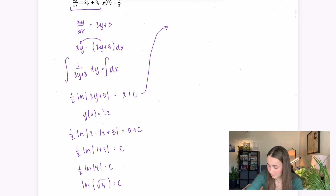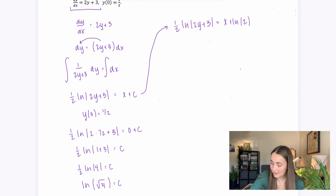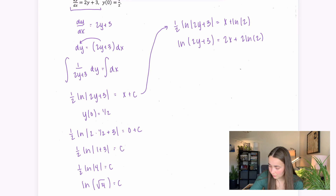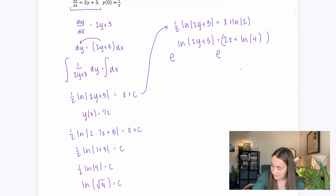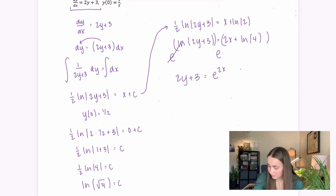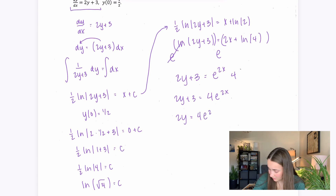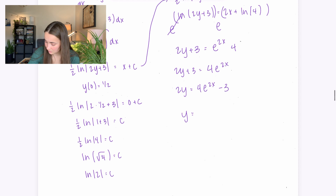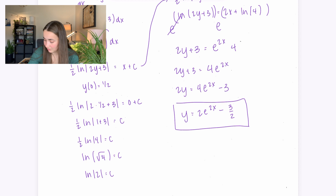Substituting c back: ½ ln|2y+3| = x + ln(2). Multiply by 2: ln|2y+3| = 2x + 2ln(2) = 2x + ln(4). Raise both sides as exponents of e: 2y+3 = e^(2x) · e^(ln4) = 4e^(2x). Subtract 3 and divide by 2: y = 2e^(2x) - 3/2. That's our function y in terms of x.